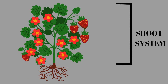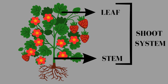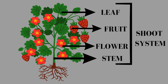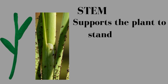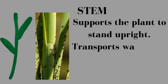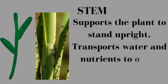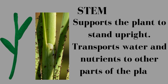The shoot system consists of stem, leaf, flower, and fruit. Stem supports the plant to stand upright and transports water and nutrients to other parts of the plant.